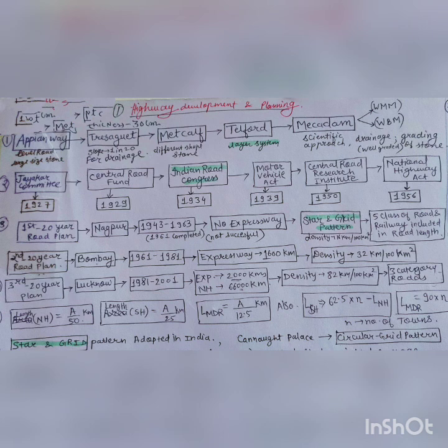In 1934, Indian Road Congress was developed. Various acts are imposed by Indian Road Congress, named Motor Vehicle Act in 1939 and National Highway Act in 1956. CRRI, called Central Road Research Institute, was set up in 1950. Then three 20-year road plans are proposed by Indian Road Congress.